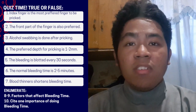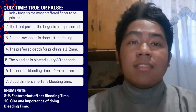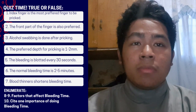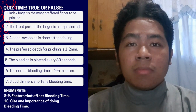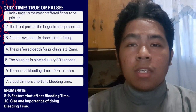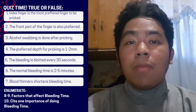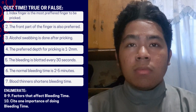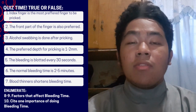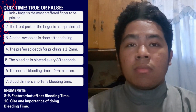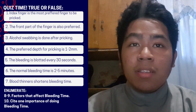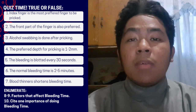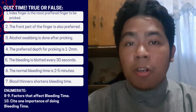Number five, true or false: the bleeding is blotted every 30 seconds. Number six, true or false: the normal bleeding time is two to five minutes. Number seven, true or false: blood thinners shorten bleeding time.